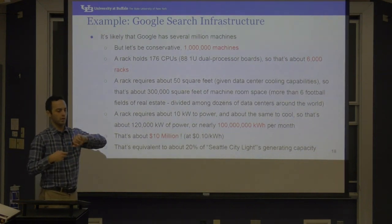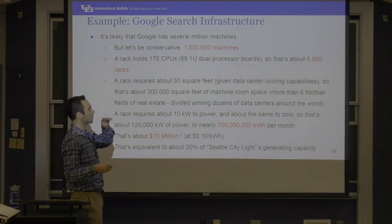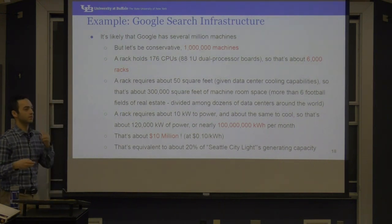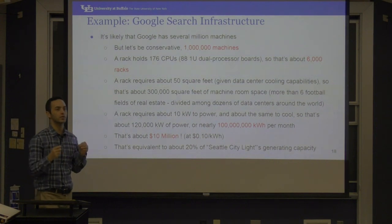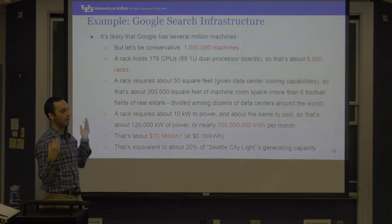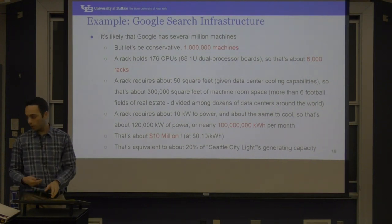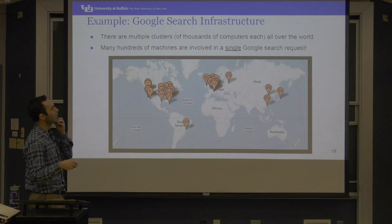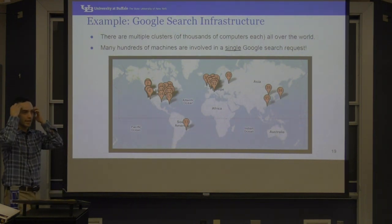An example we'll cover relatively quickly is Google. The numbers are mind-blowing — even if you estimate one million machines, they have at least six full football fields of space just for racks, using around ten million dollars per month just for powering and cooling, and that's a very conservative estimate. These are the scales of data centers. When you make a single Google search request, it's actually handled by hundreds of computers — not just one — because the web is so fast and no single machine can cache everything for all requests.